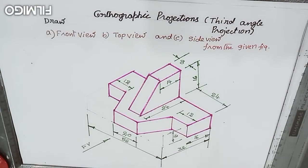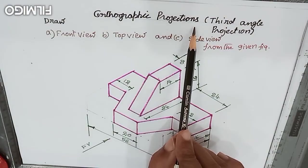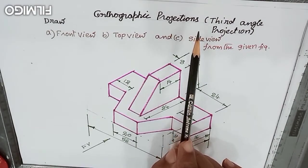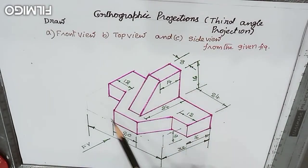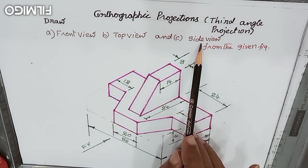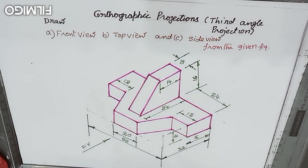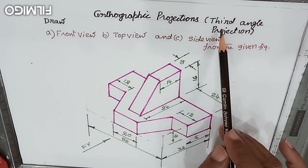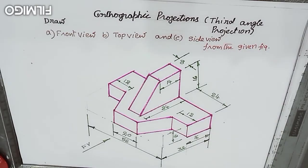Welcome to the discussion of orthographic projections. Here, a pictorial view is given from which we have to draw two-dimensional drawings: front view, top view, and side view. This particular problem asks us to solve using third angle projection. In earlier videos, we solved using first angle projection, but for this problem we are going to use third angle projection.